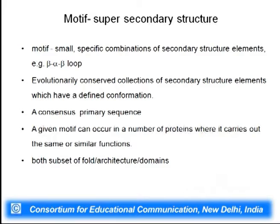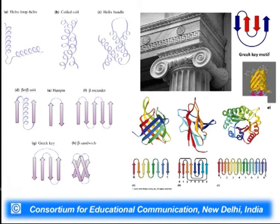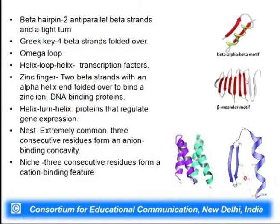A motif can occur in a number of proteins where it carries out similar or the same functions. A motif is a subset of fold and is an architectural or topological unit. Examples include helix-loop-helix, coiled coils, and in beta structures we see the Greek key motif as observed in Greek building design. There are also barrels, twisted beta sheets, combinations of alpha helices and beta structures, beta hairpins, Greek keys, meandering loops, and zinc fingers. Zinc fingers are DNA binding domains.